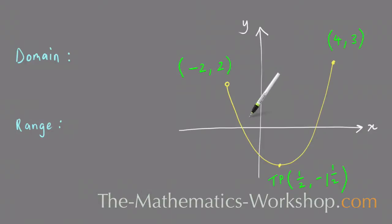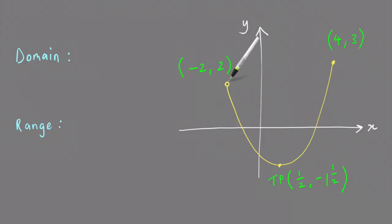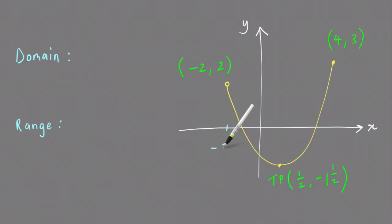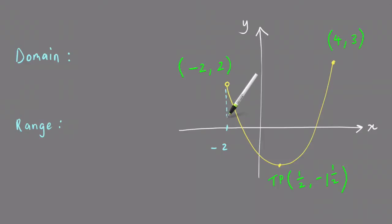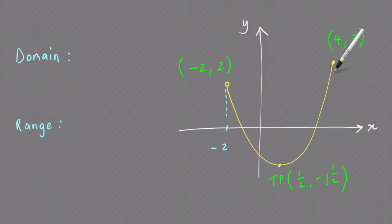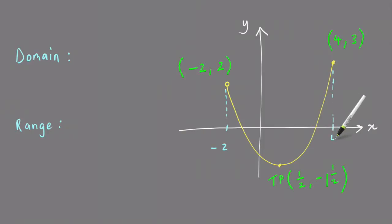The easiest way to find the domain is to look for the lowest x value on the graph, which is minus 2. If I mark that in on the x-axis, then minus 2 corresponds to that point. If I do the same thing at this end point, the x value is 4, and I mark that down to the x-axis to show where the value 4 is.